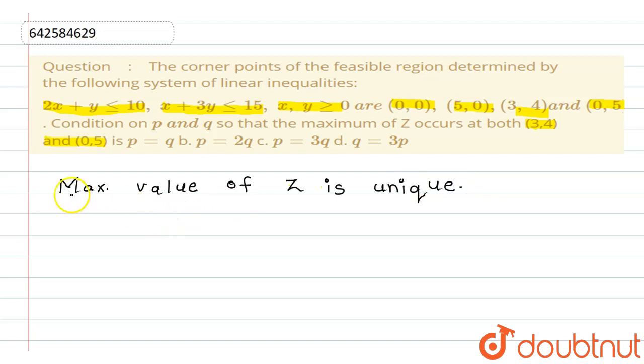So given, it's given that Z occurs at which two points? (3,4) and (0,5). Yes.